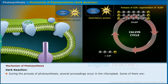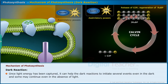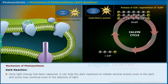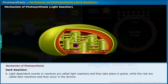During the process of photosynthesis, several proceedings occur in the chloroplast. Some of them are: converting light energy into chemical energy, splitting of the water molecule, and reduction of carbon dioxide to carbohydrates. Once light energy has been captured, it can help the dark reactions to initiate several events even in the dark, and some may continue even in the absence of light. Light-dependent reactions are called light reactions and they take place in the grana, while the rest are called dark reactions and they occur in the stroma.